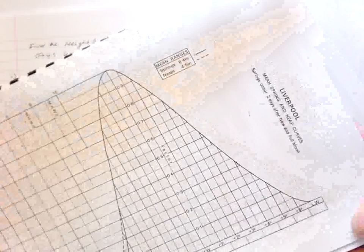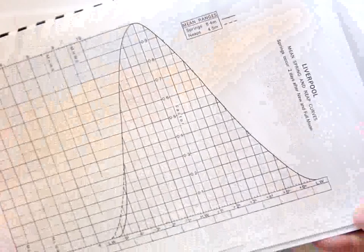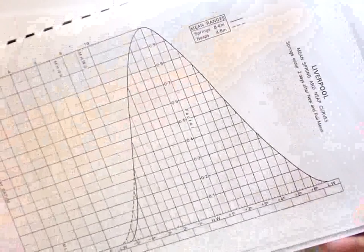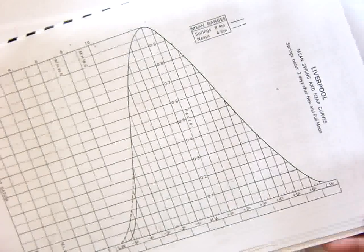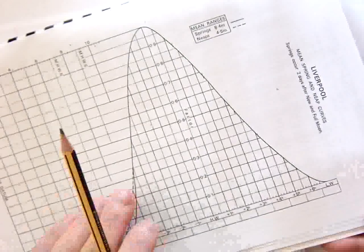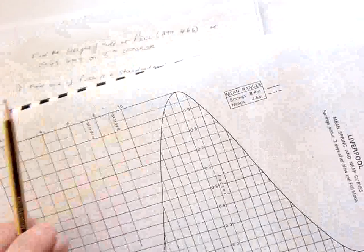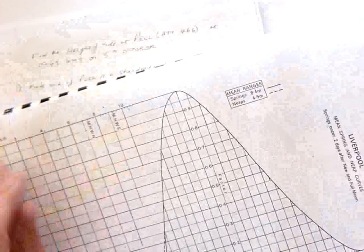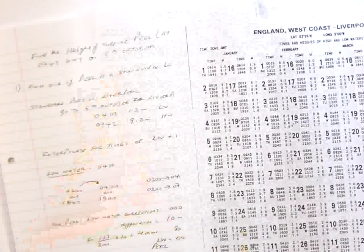We need to look up Liverpool on the 5th of October. Just before we do, we've got the curve for Liverpool there. So what we're looking to do is get all the information about Peel, the correction if you like, and then use the Liverpool curve to find out the height of tide at Peel at 0745. So we go in the tables for Liverpool on the 5th of October.